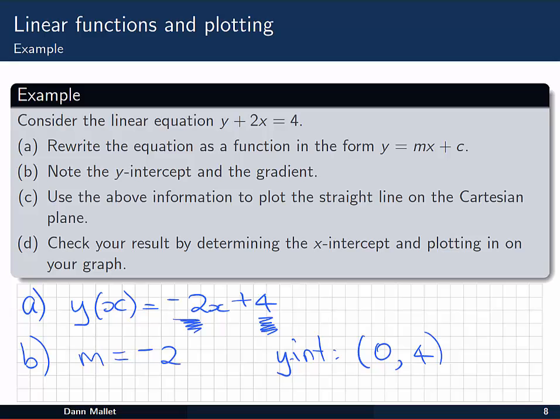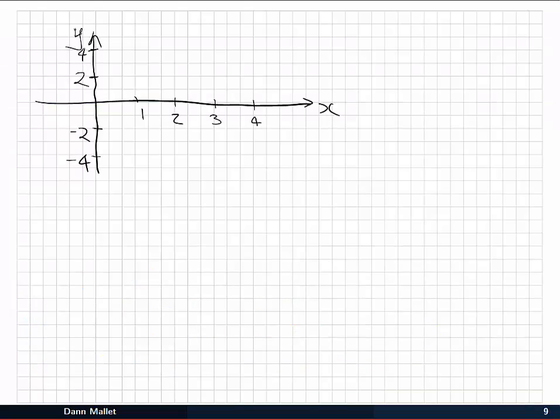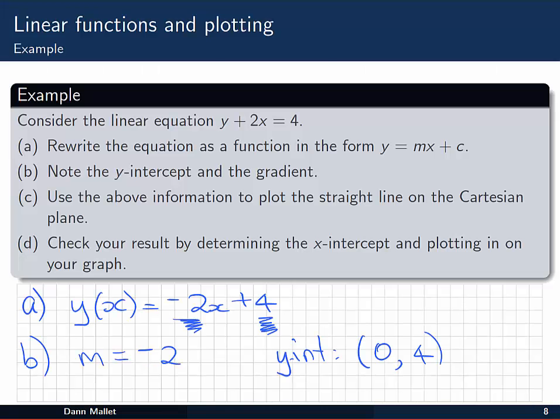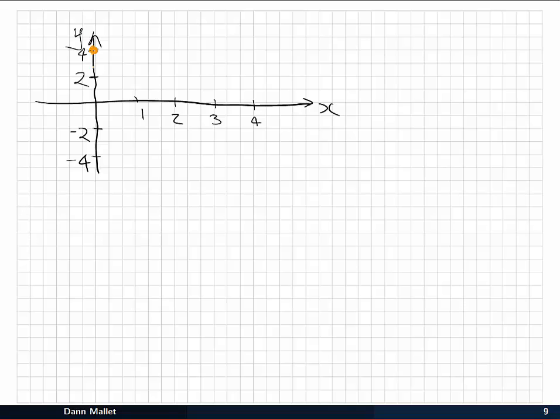So to do that, the first thing I'm going to do is plot my y intercept, which is at x equals 0 and up at y equal to 4. There we have that. And the slope was -2. It's a negative, so that means we need to go down by 2 and across by 1, giving me that point there. Then I need to draw my line through those. OK, just like that. So we've got our line through our points.